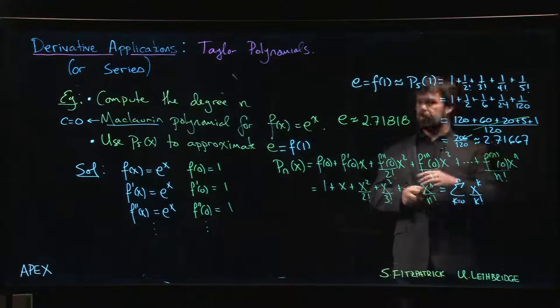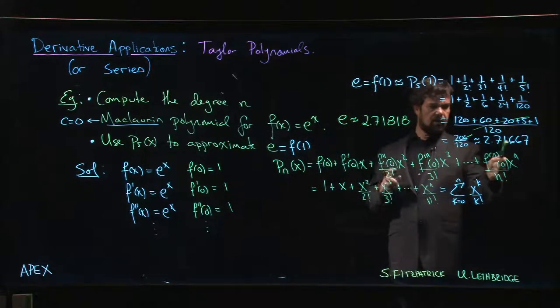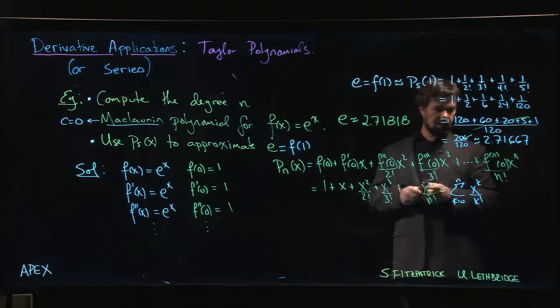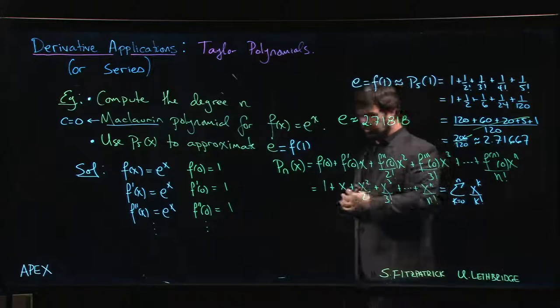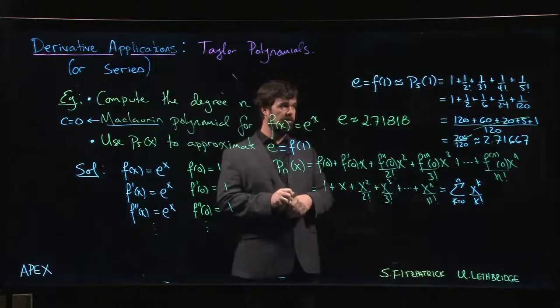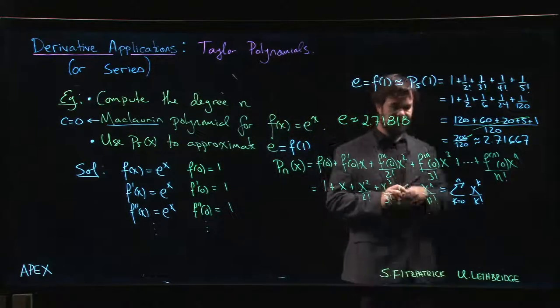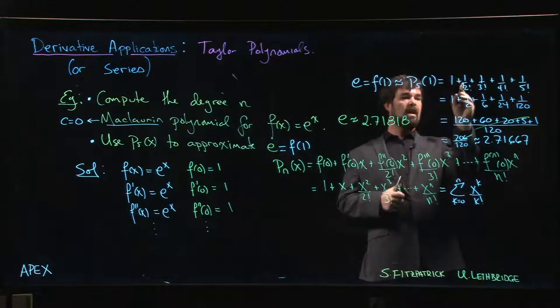So this approximation is pretty good. First two decimal places are accurate, we're off by 2 in the third decimal place. And if we added more terms, our approximation would keep getting better and better. Oh, ha! I know what's wrong. I fixed it.